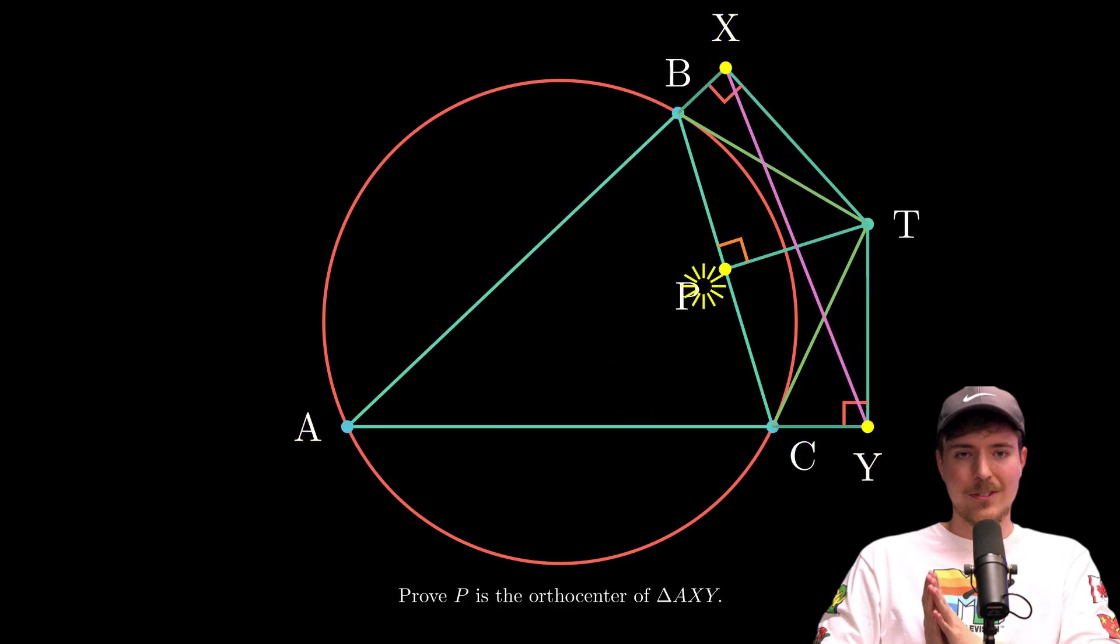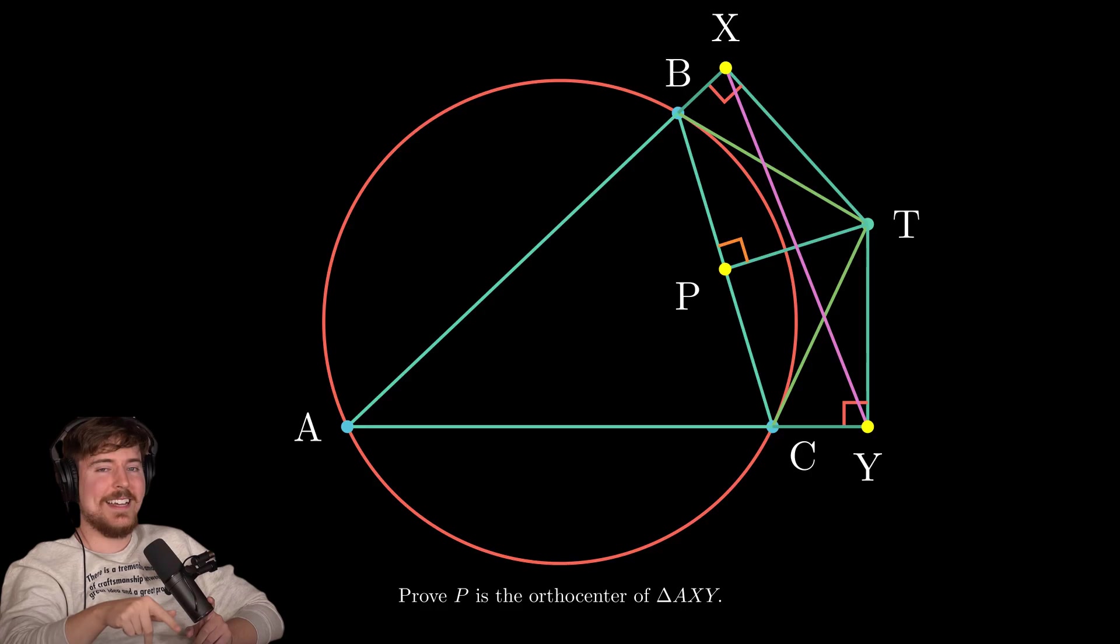That means P is where all the action happens. The point where the altitudes of triangle AXY crash into each other. So how do we tackle this? Let's input inspiration and output ideas. Take some time to think about it on your own. Let's get going.